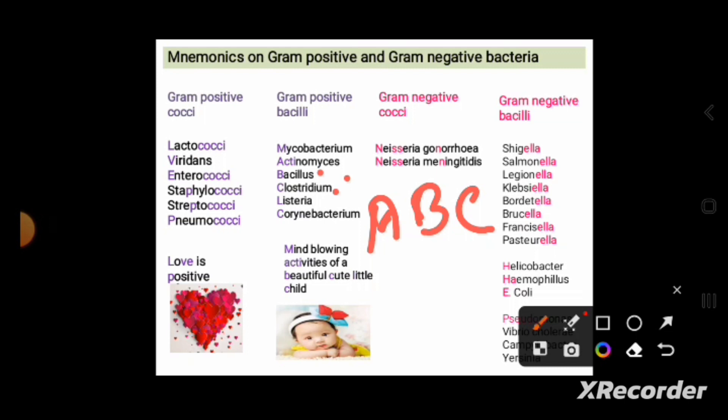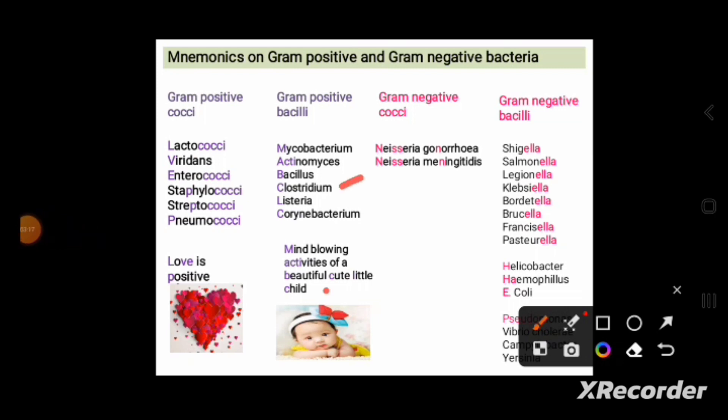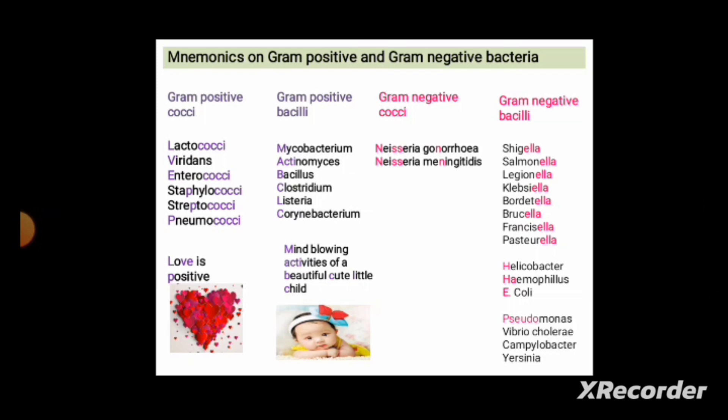To remember these, use the sentence: 'Mind-blowing activities of a beautiful cute little child.' Here: Mind — M for Mycobacterium; blowing activities (Acti) — for Actinomyces; of a beautiful — B for Bacillus; cute — C for Clostridium; little — L for Listeria; child — C for Corynebacterium. This helps you remember all key gram-positive bacilli.